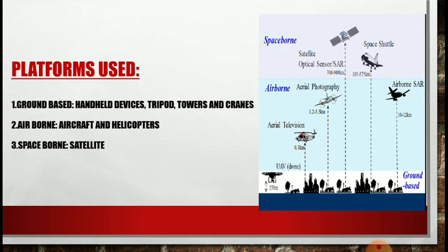What are the platforms used in remote sensing? There are three platforms used in remote sensing. Number one: ground-based platform. Examples of ground-based platforms include handheld devices and tripod.